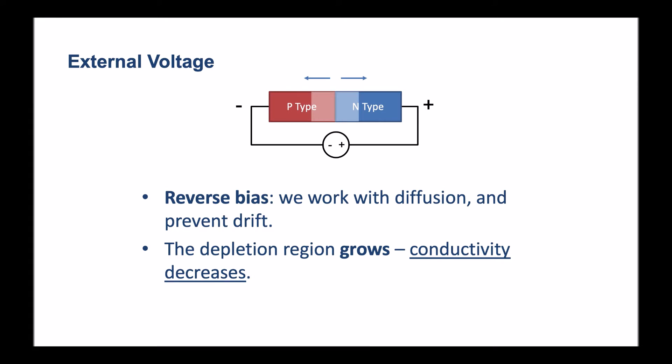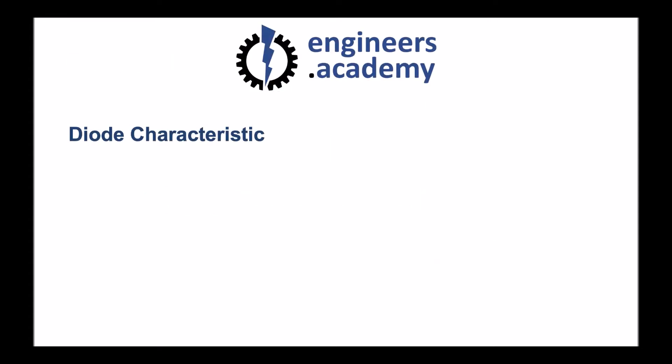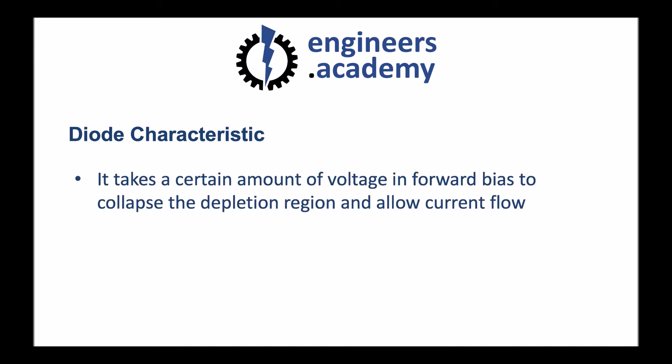A p-n junction is more commonly seen as a diode. And what we find with a diode is that it takes a certain amount of voltage and forward bias to collapse the depletion region and allow current to flow. And we can see this in some simple experiments to observe diode characteristic.